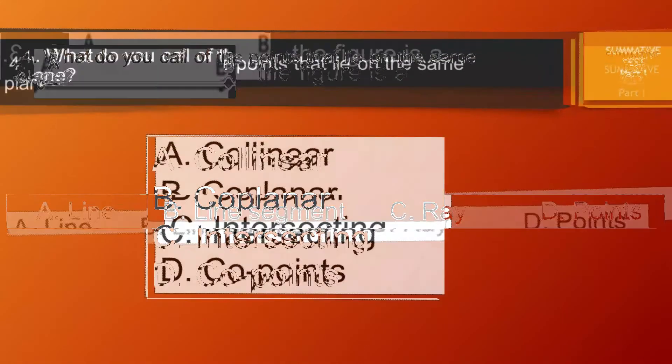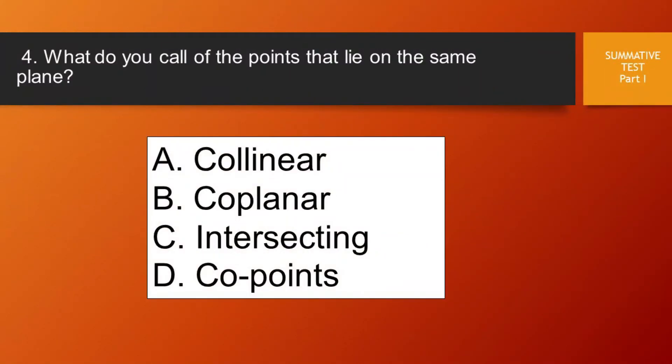Question number four. What do you call the points that lie on the same plane? Letter A, collinear. Letter B, coplanar. Letter C, intersecting. Letter D, points.